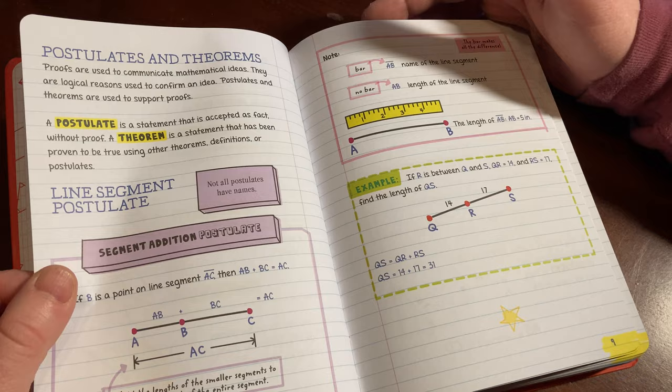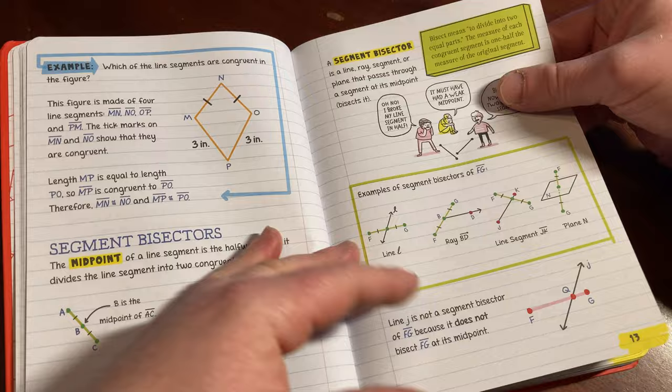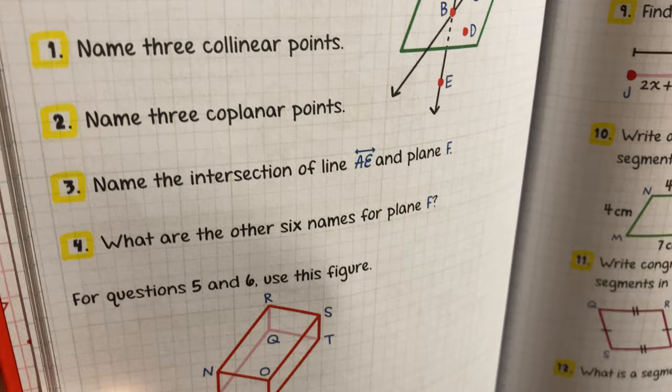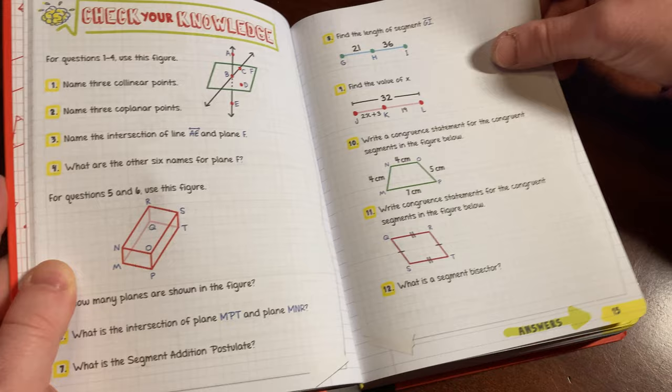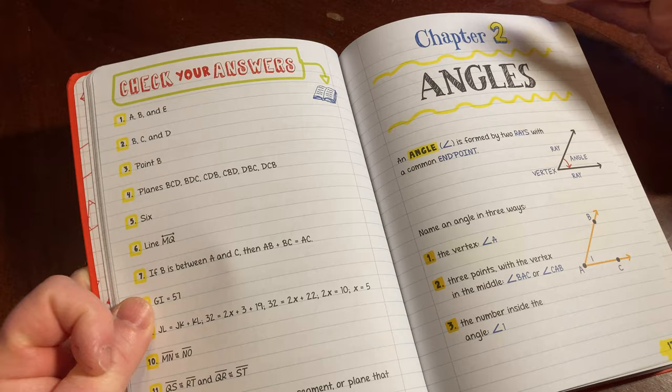And look, they have exercises. It's really cool. Let me get to the exercises. So check your knowledge, right? So you've got exercises here. So name three collinear points. Name three coplanar points. Just naming things. And then just some simple questions here. And then you turn the page, answers. And look, we have the answers right here, right there. So you can check your work right away. So it's really nice. And that's the structure of the entire book, basically.